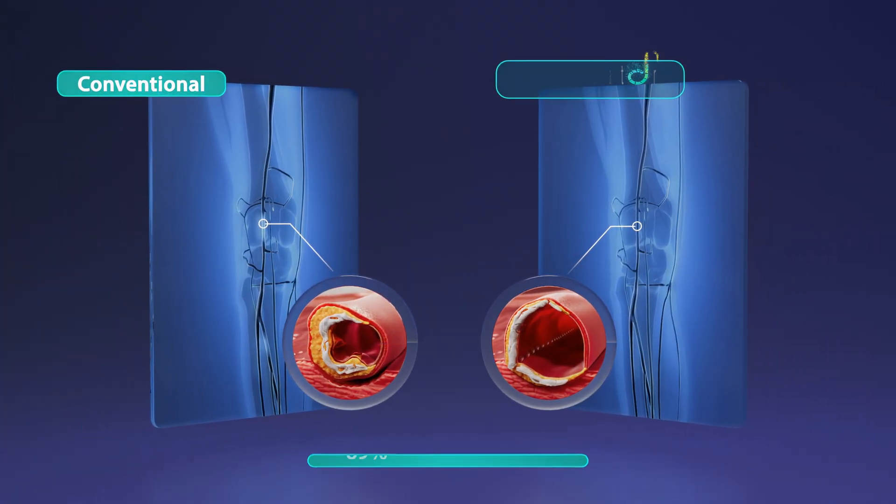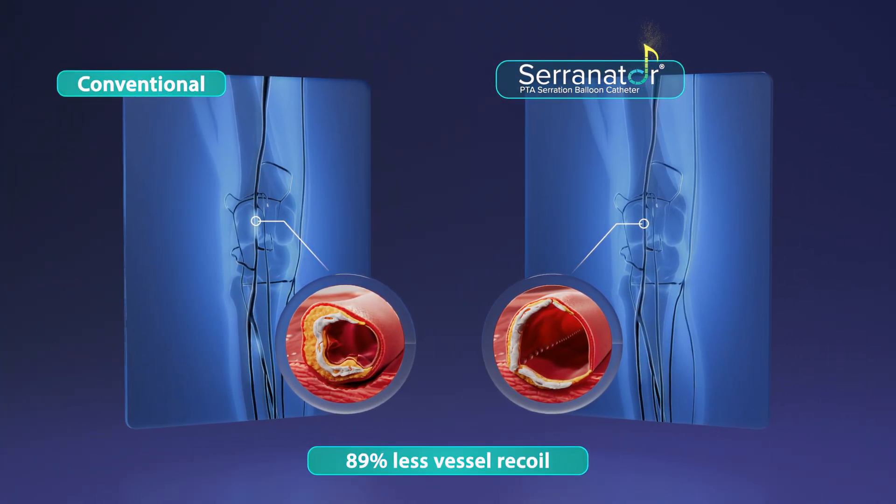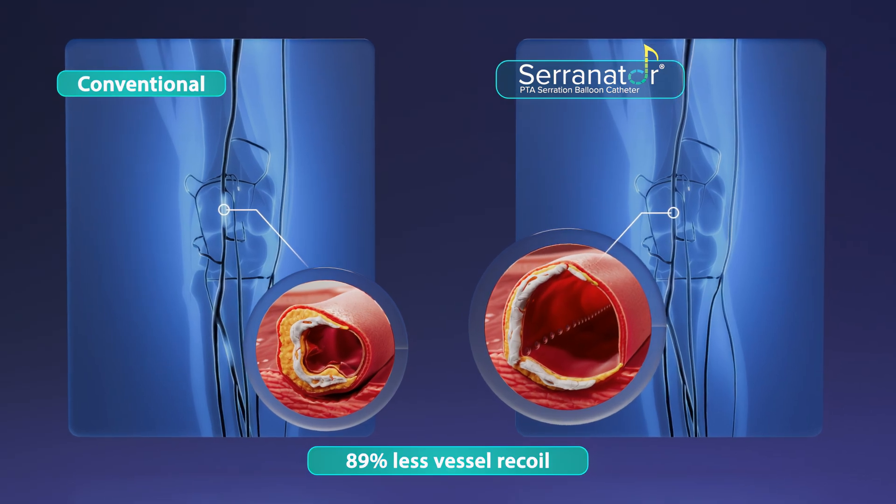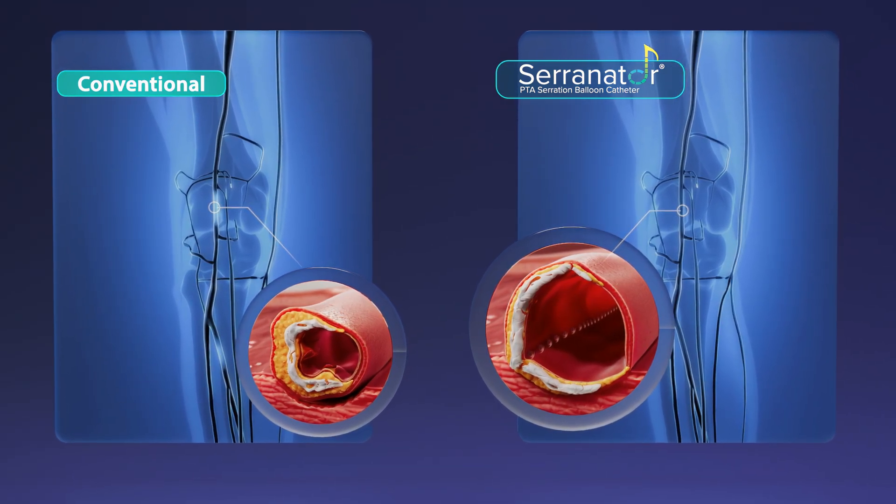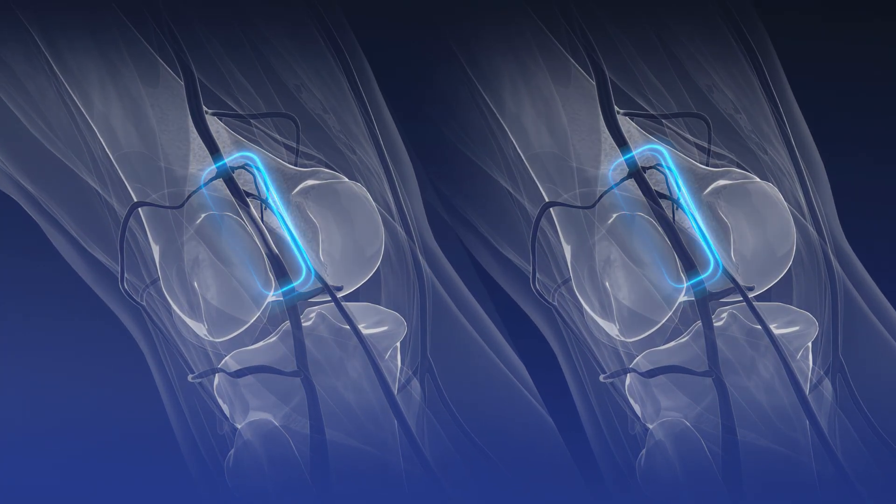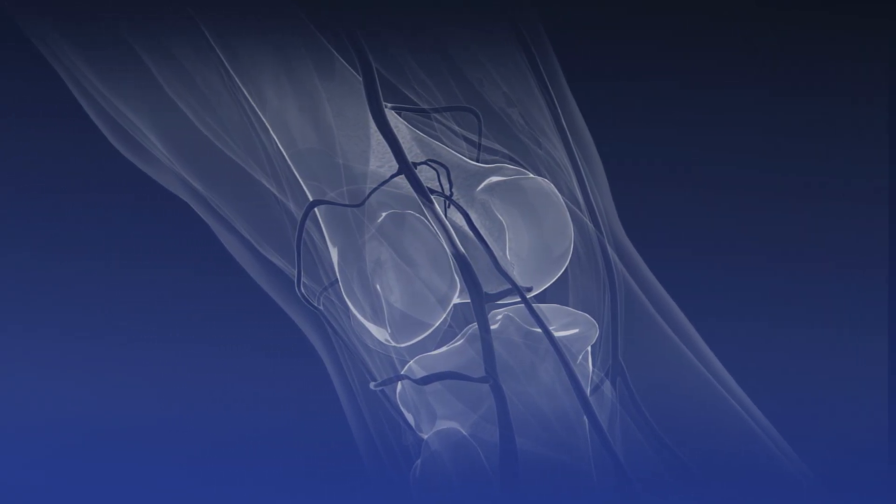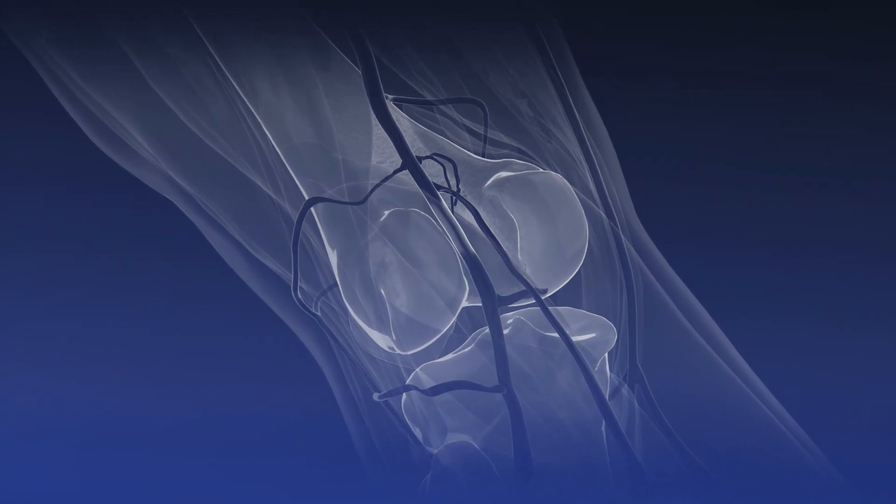Lesions treated with Serenator have 89% less recoil when compared to a standard angioplasty balloon. The result? Consistent vessel expansion with a reduced need for bailout stenting.